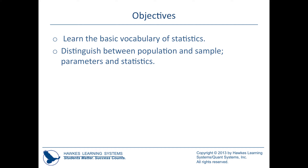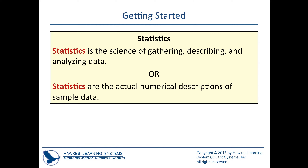Statistics as a science and a statistic that we collect are two different things, and that's part of the learning goals here. Statistics as a science is about collecting, analyzing, and interpreting data. This textbook uses a slightly different definition — gathering, describing, and analyzing data — but essentially those are saying the same thing.